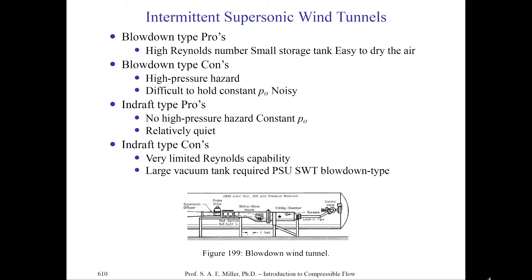The downsides of blowdown tunnels include a very high pressure hazard from the bottle field, they're extremely noisy so they're not suited to aeroacoustic measurements, and it's difficult to hold a constant total pressure as the tunnel exhausts. The in-draft tunnel has no high pressure hazard, but has a vacuum chamber which can also be a safety concern. These are relatively quiet because acoustic waves can't travel upstream in supersonic flow. Unfortunately, they have very limited Reynolds number capability since total pressure is always atmospheric, giving a very small range of pressure ratios.